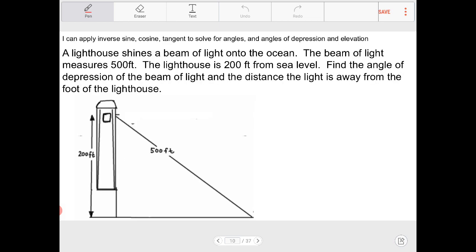Let's take a look at the next problem. Pause the video to see if you can figure this out. So it says here a lighthouse shines a beam of light onto the ocean. The beam of light measures 500 feet. The lighthouse is 200 feet from sea level. Find the angle of depression of the beam of light and the distance the light is away from the foot of the lighthouse. In other words, we're looking for this horizontal distance there.